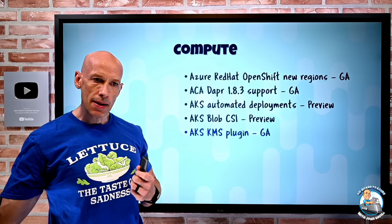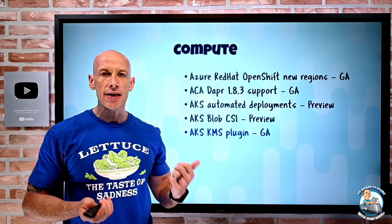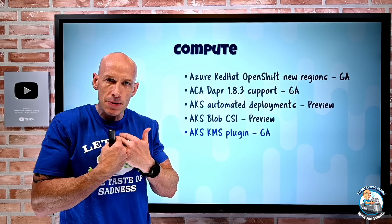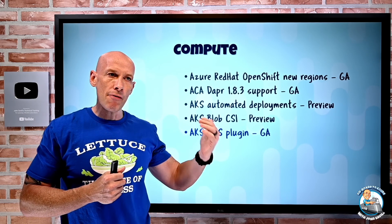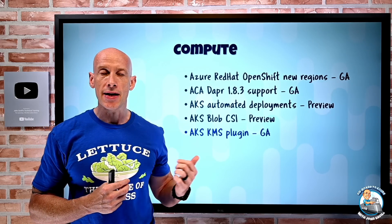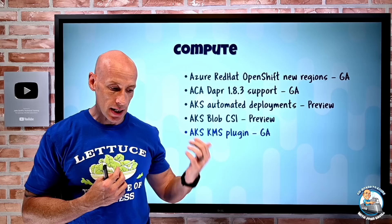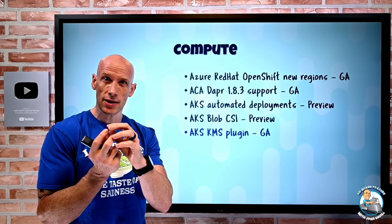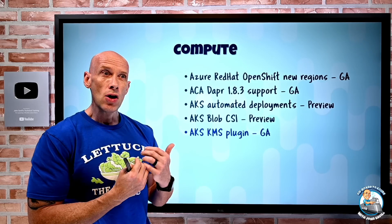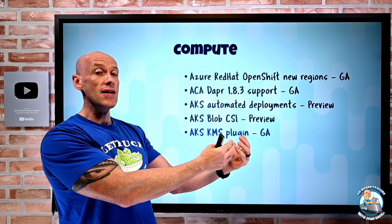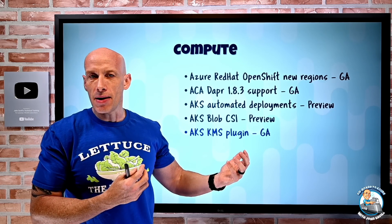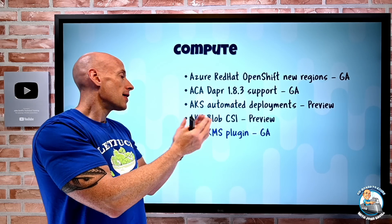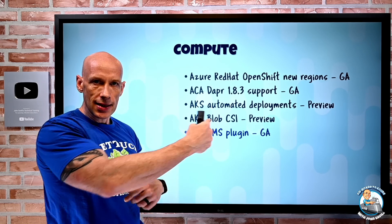AKS KMS plugin: KMS is the key management service in Azure, great for storing secrets, keys, and certificates. This plugin enables you to encrypt the secrets in your etcd database — part of the Kubernetes control plane — at rest using a key from your Key Vault. You have control of that key, including rotation. To use this you must have a user-assigned managed identity on your AKS, not system-assigned, because there would be a cyclical dependency when granting the AKS permission to the key vault at creation time.